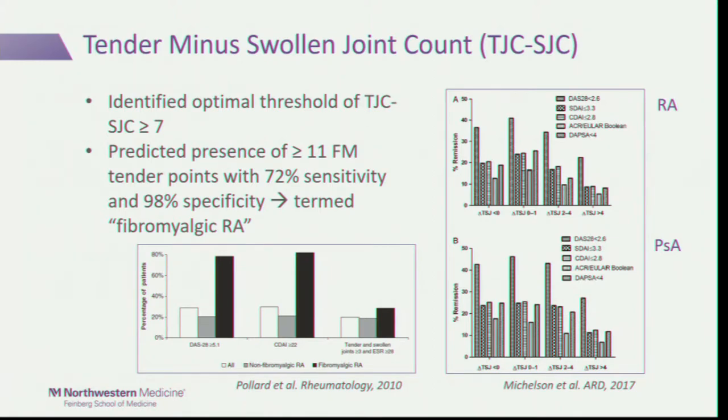A more recent study by Mickelson also examined the tender minus swollen joint count discrepancy using different cutoffs, and found that across both rheumatoid arthritis and psoriatic arthritis, the greater the discrepancy, the less likely patients were to be considered in remission on composite disease activity measures. This is a cautionary tale: when looking at disease activity, you need to consider other causes of pain, because you may not want to escalate to a stronger immunosuppressant when composite scores are high largely due to centralized pain.